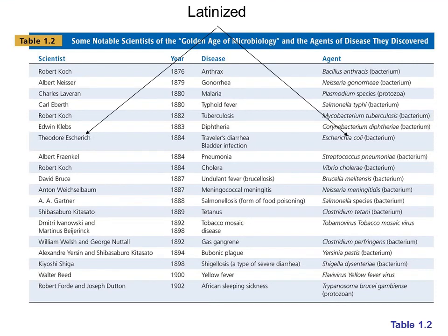A table shows various scientists and their discoveries: Robert Koch in 1876 discovered that Bacillus anthracis was the causative agent of anthrax, followed by many other scientists who discovered the etiology of different diseases.